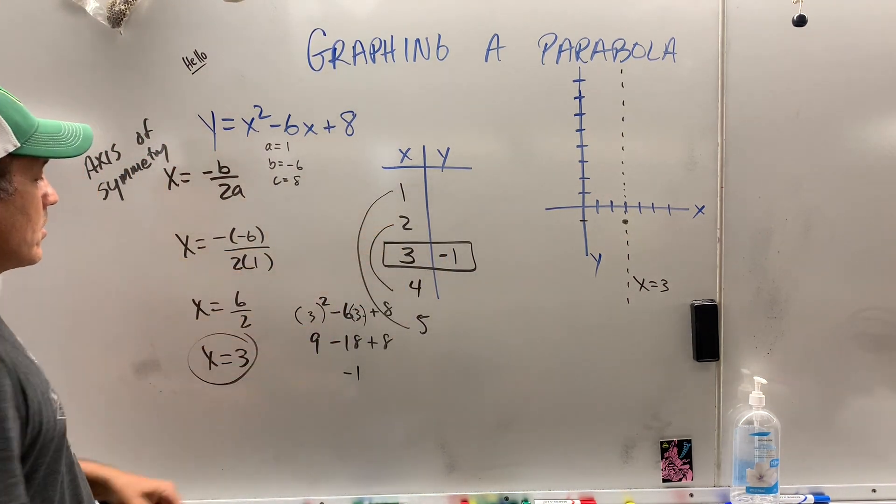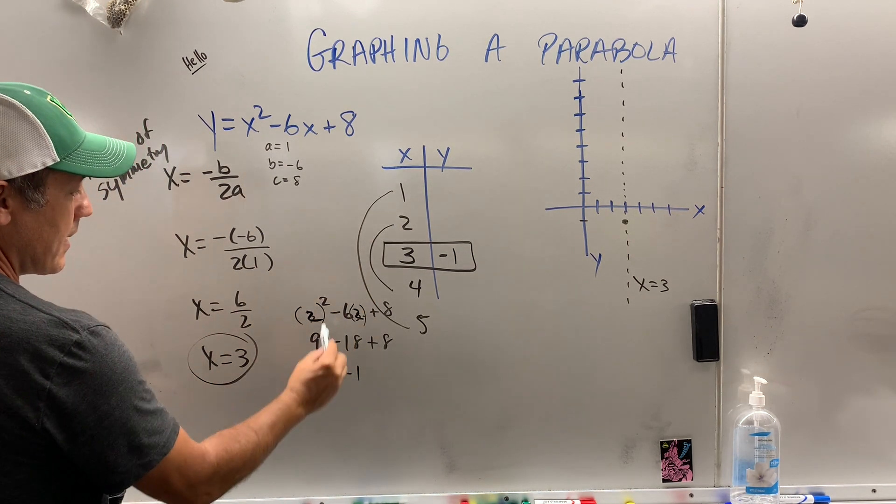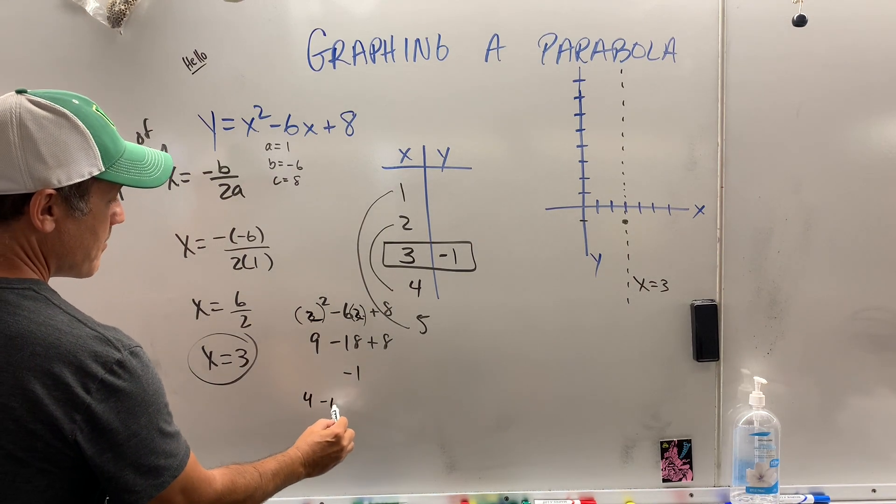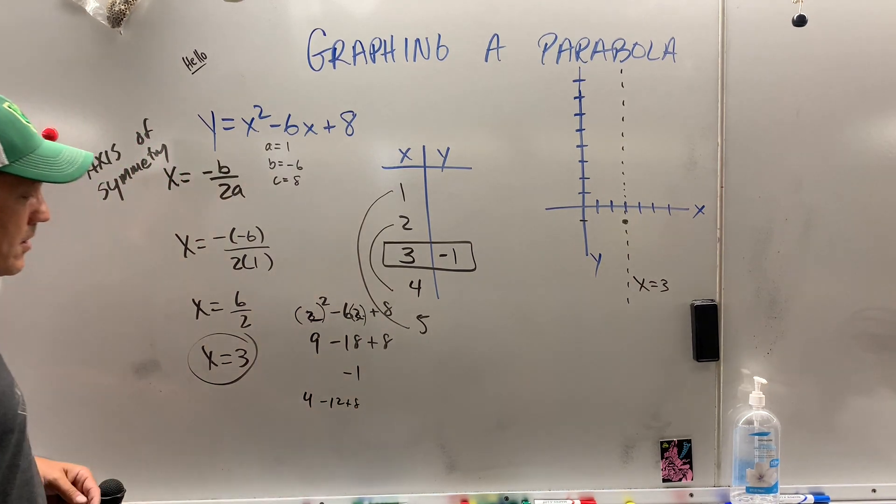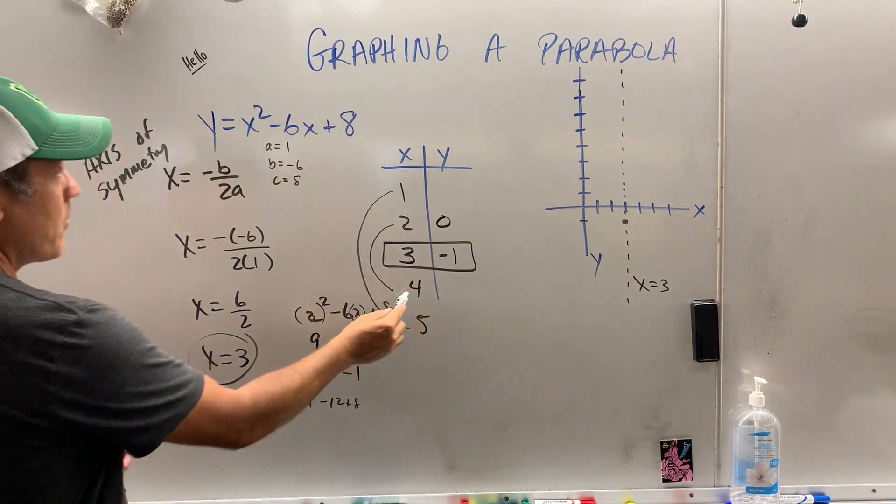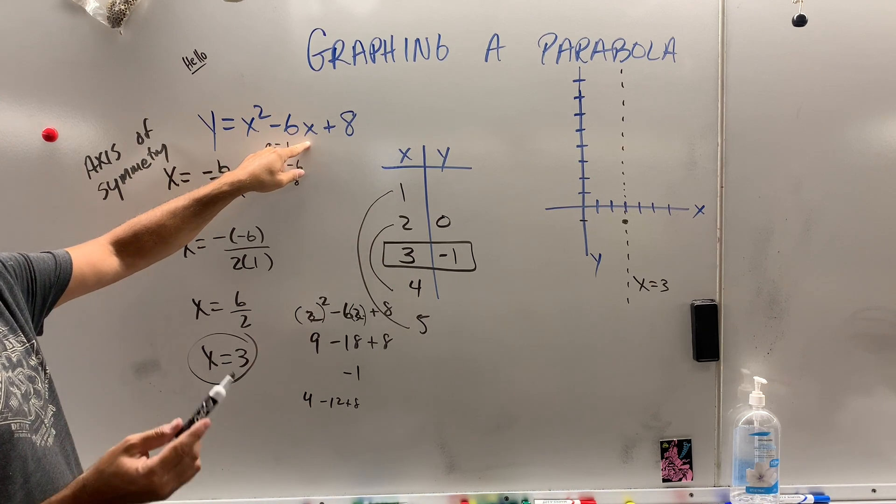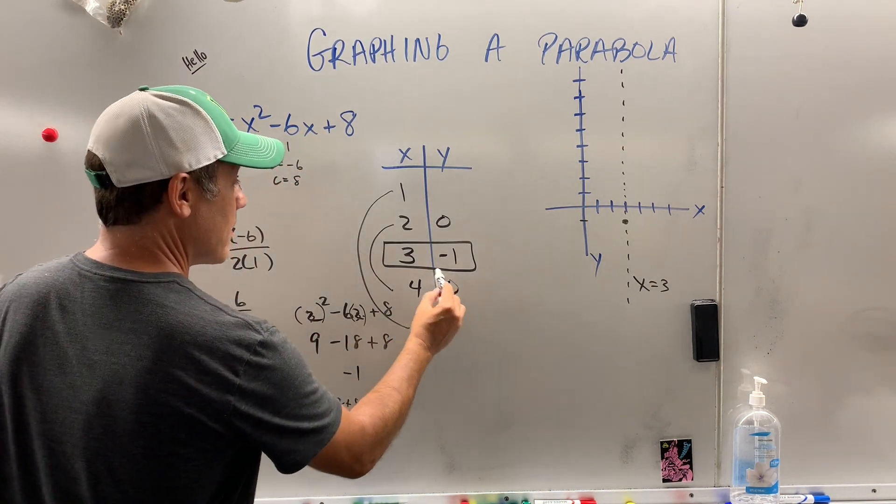So, now let's take 2. You can put 2 in here. You could go ahead and put 2. Again, that's 4 minus 12 plus 8. What is, oh, 0? Oh, that's pretty convenient. So, 4, when we put 4 in, 16, 24, negative 6 times 4 is negative 24. That also equals 0.